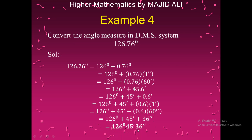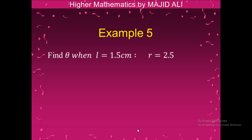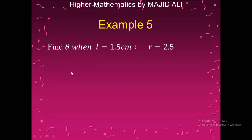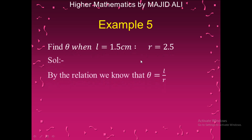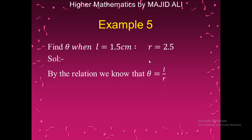Example 5: Find the angle θ when l equals 1.5 and r equals 2.5. Using the relation θ = l/r, substituting l = 1.5 and r = 2.5, we get θ = 0.6 radians.